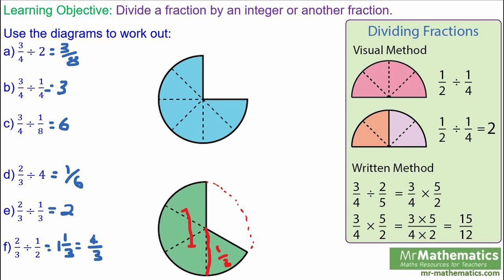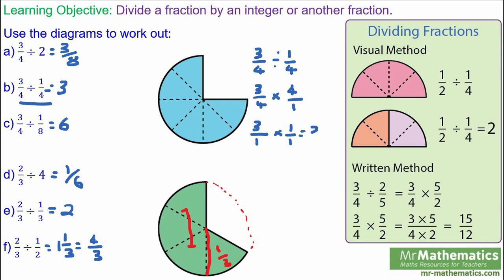Now we're going to move on to the written method, and we'll just do a couple of questions. We'll do three quarters divided by one quarter. We can't really divide fractions directly, but what we can do is multiply by the reciprocal. That means three quarters multiplied — which is the opposite of divide — by the reciprocal, which is the opposite of one quarter. Then you can use cross-simplifying to make three over one times one over one, which is simply three.